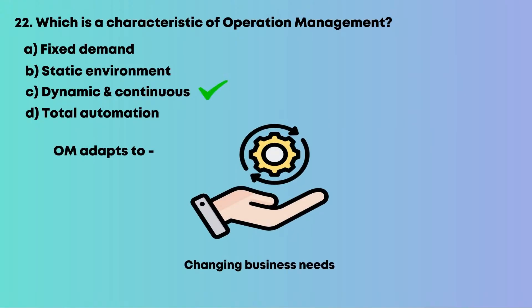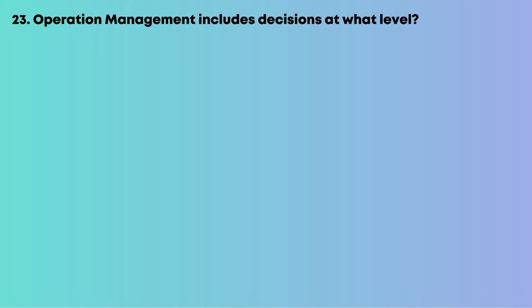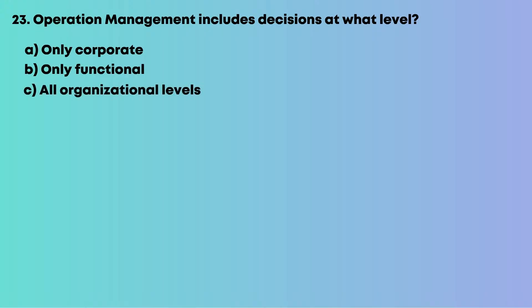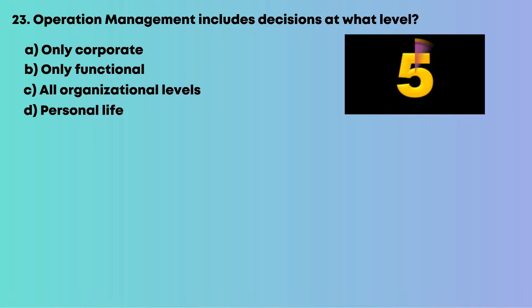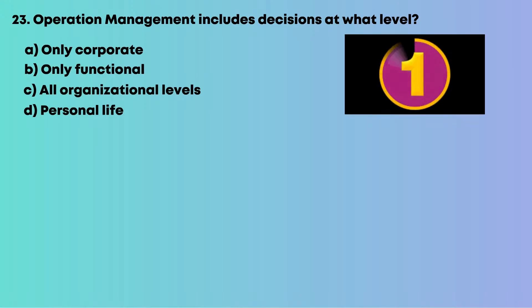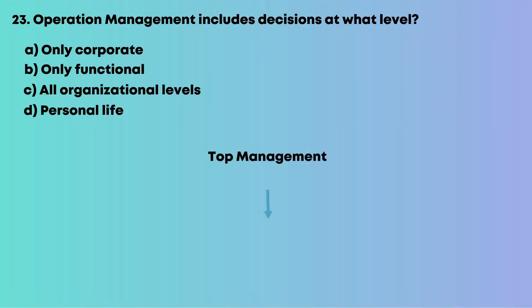Question 23: Operations management includes decisions at what level? Options are: A, only corporate; B, only functional; C, all organizational levels; D, personal life. From top management to shop floor decisions, the right answer is C, all organizational levels.